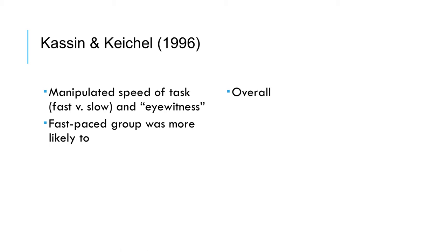To go over the findings of the original alt-key paradigm study, what Kassin and Kiechel did was they manipulated the speed of the task — fast versus slow — and the eyewitness. The purpose of increasing the speed was to make it more plausible that they may have accidentally hit the alt-key, and the fast-paced task also feels more stressful than the slow-paced task.